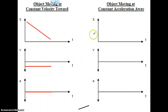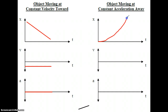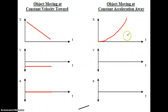Next, an object moving at constant acceleration away. That means this object is speeding up, and if it's moving away from the point of origin, the X numbers are getting larger. This will result in a curved line sloped upward, and curved upward means it's getting faster, indicated by the fact that the X numbers are getting bigger as time increases.